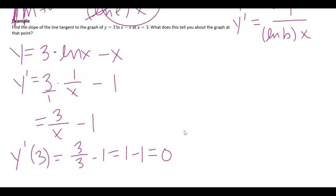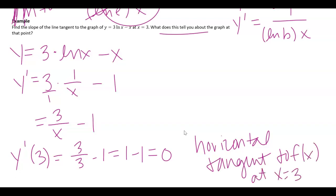Well, if I have a slope of 0, what does this tell you about the graph? I must have a horizontal tangent to f of x at x equals 3 because I ended up having a slope at that x value that was 0.